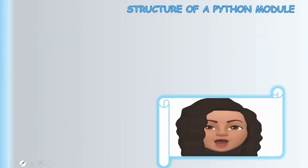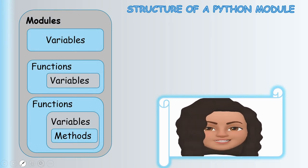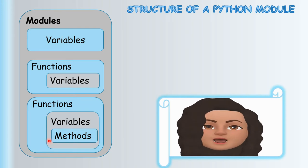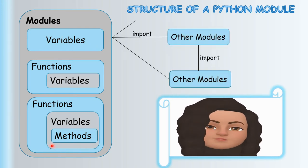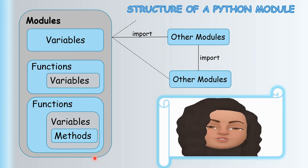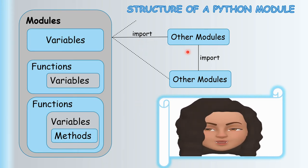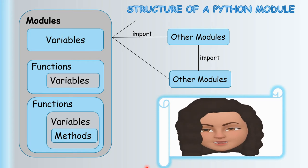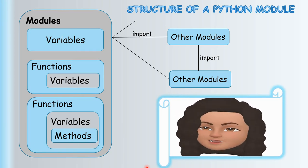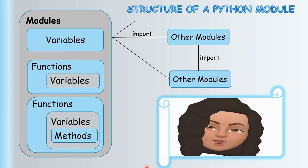This is the structure of a Python module in pictorial representation. As you can see in the picture, a module consists of variables and functions; inside the functions you can have variables, methods, etc. A Python module is a file with a .py extension containing variables, data definitions, statements, and functions related to a particular task. These modules can be imported into other parts of the program or into another module. Python modules that come preloaded with Python are called standard library modules, and we can also easily create our own modules.